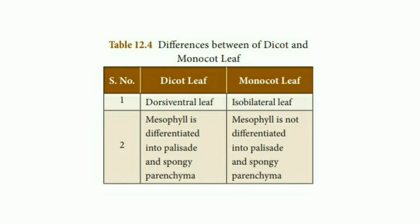Next we move on to Table 12.4, which shows the difference between dicot and monocot leaf. The table is divided into two columns: dicot leaf and monocot leaf. Dicot is also known as dorsiventral leaf, and monocot is isobilateral leaf. In dicot leaf the mesophyll is differentiated into palisade and spongy parenchyma, whereas in monocot the mesophyll is not differentiated.